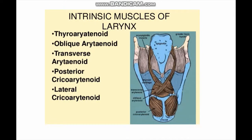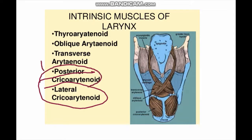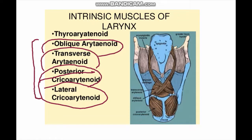The muscles of the larynx are divided into intrinsic and extrinsic categories. Intrinsic muscles are further classified into three groups: those controlling the opening and closing of the glottis, those controlling the tension of the vocal cords, and those altering the shape of the laryngeal inlet. Muscles controlling the glottis include the lateral cricoarytenoid, posterior cricoarytenoid, transverse arytenoid, and oblique arytenoid.